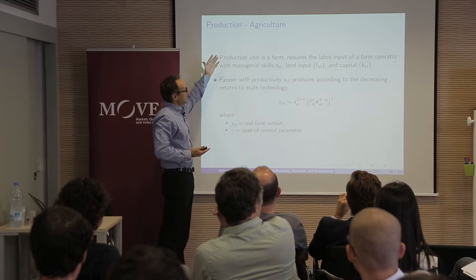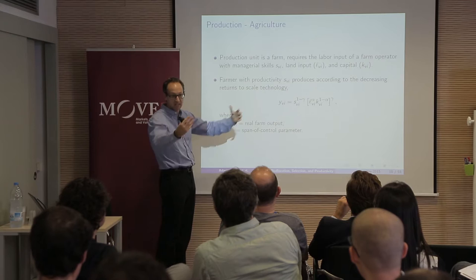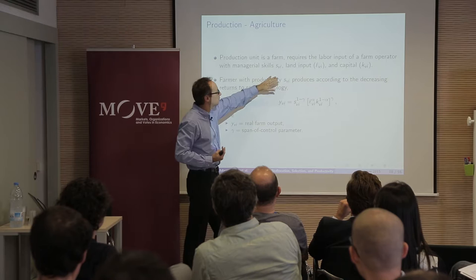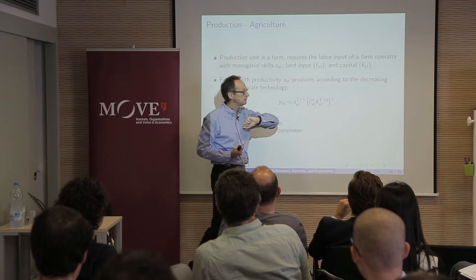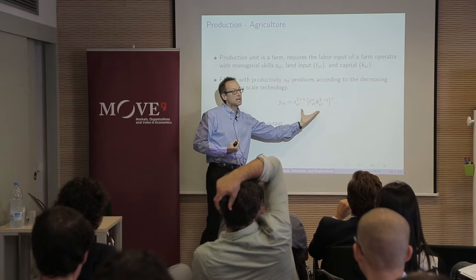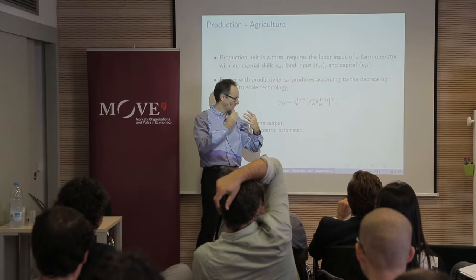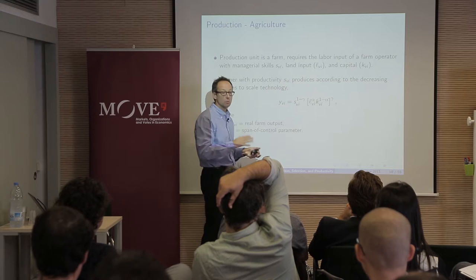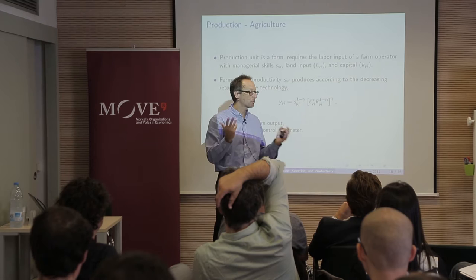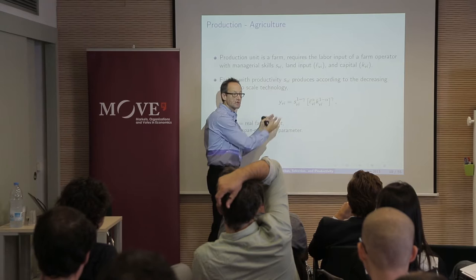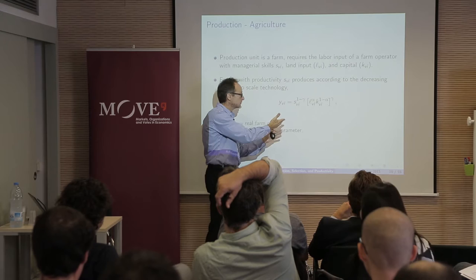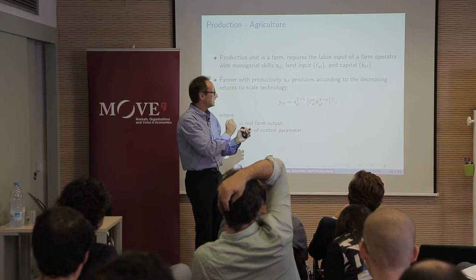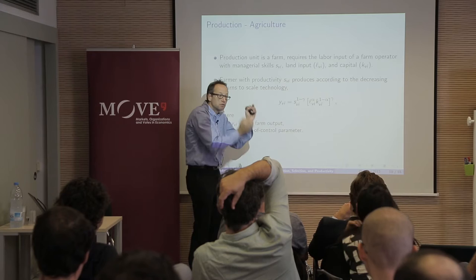A farm is basically a production unit with input from the farm operator — this is the family farm — and some underlying productivity of that farm. It has inputs of land and capital, which are the most important inputs. There is decreasing returns to scale at the production unit. The assumption is that they produce the same good but there's a span of control over input factors. An efficient allocation is not one that gives all the land to the most productive farmer — you would always allocate land to all of them, but in proportion to productivity.